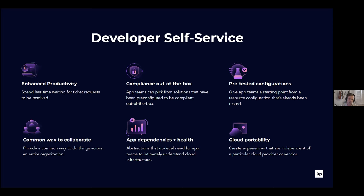Fourth, providing a common way to do things across the entire organization — there's now a common entity you can interact with to collaborate. Fifth, abstractions that up-level the need for app teams to understand the underlying infrastructure: once you've got this platform, you can abstract things above and below to make it easier. Sixth, for organizations with a multi-cloud footprint running across multiple hyperscale cloud providers, there's a desire for a platform that gives a common abstraction across clouds — enabling disaster recovery or pivoting to another provider.